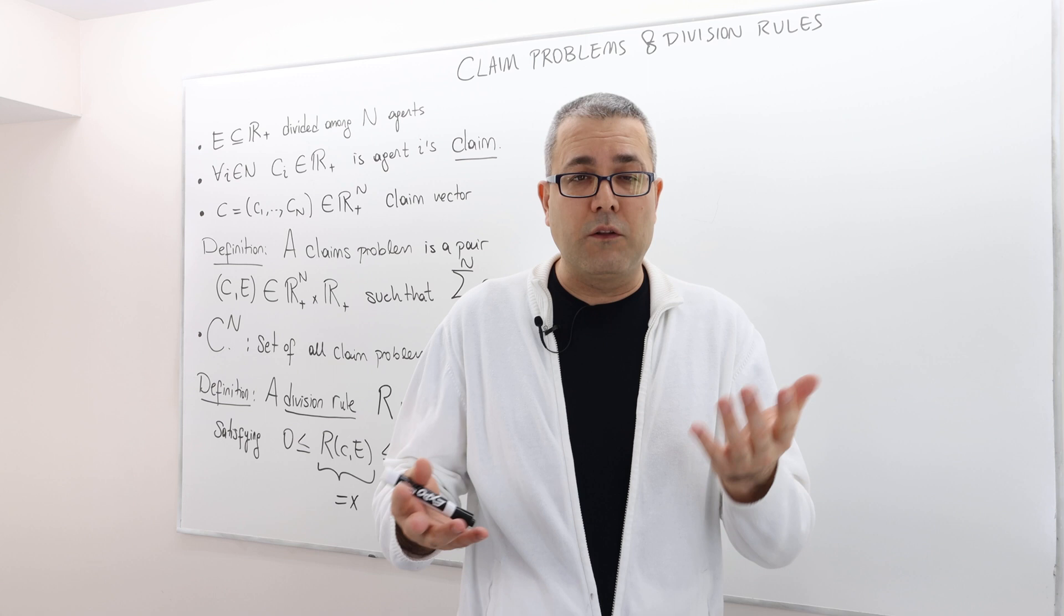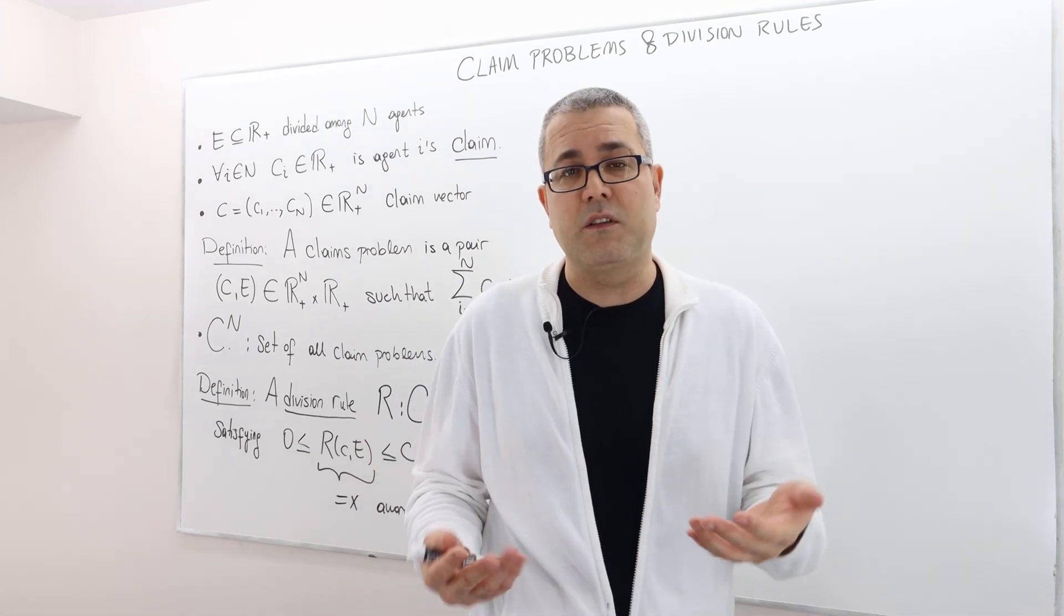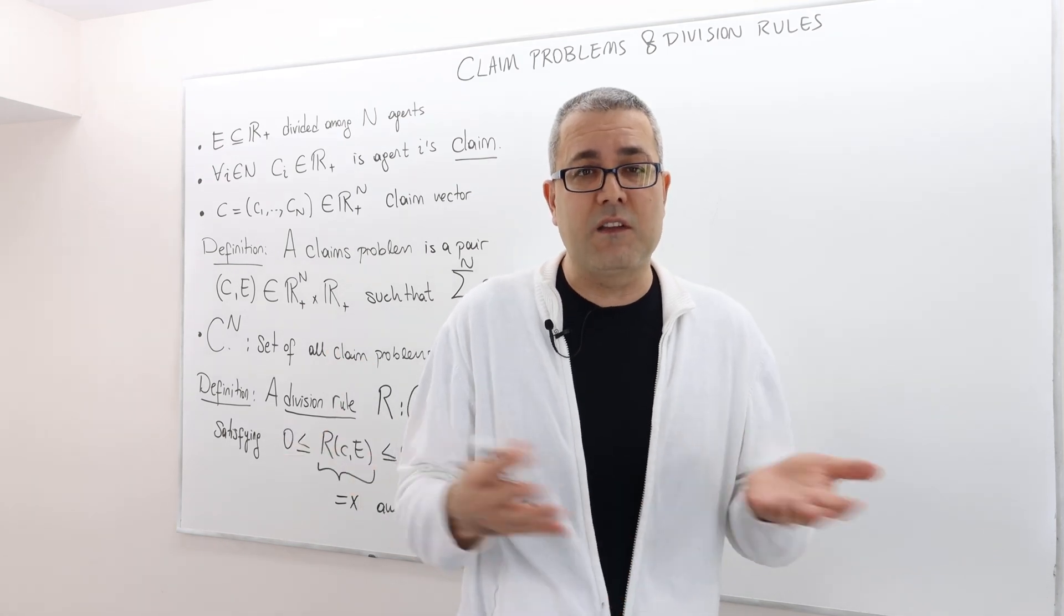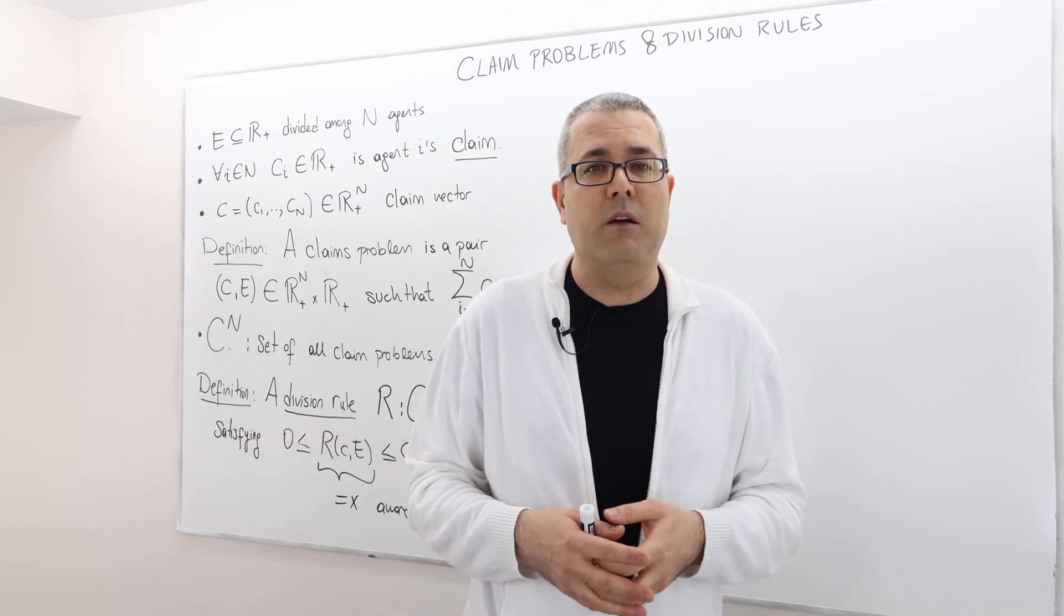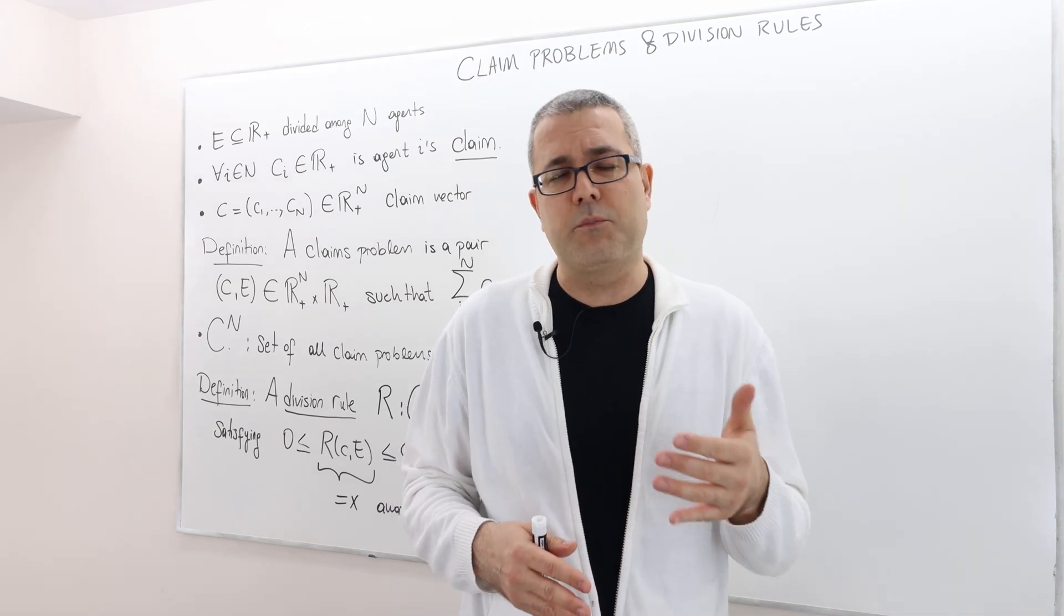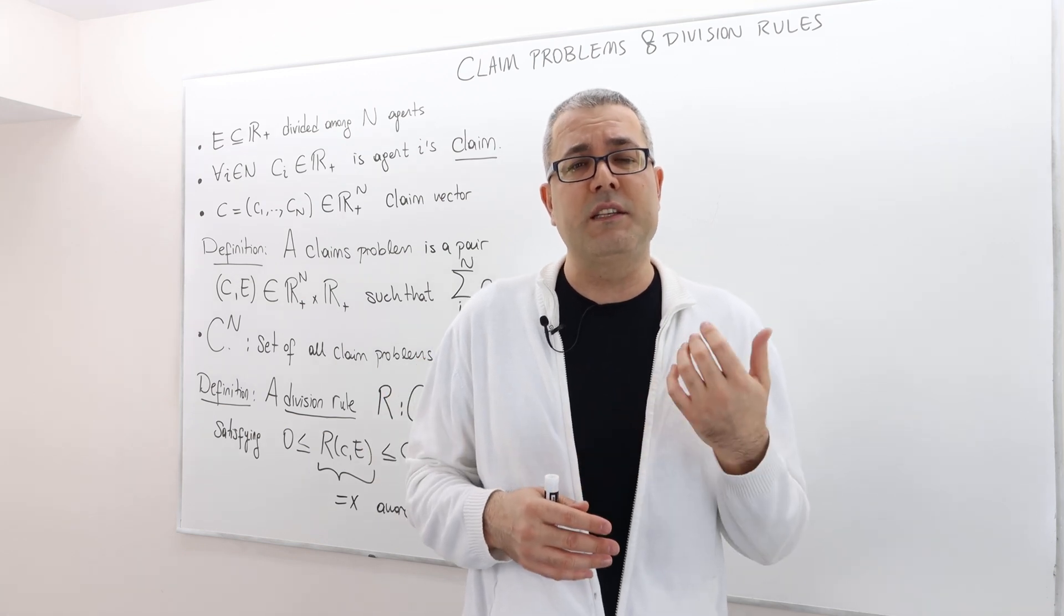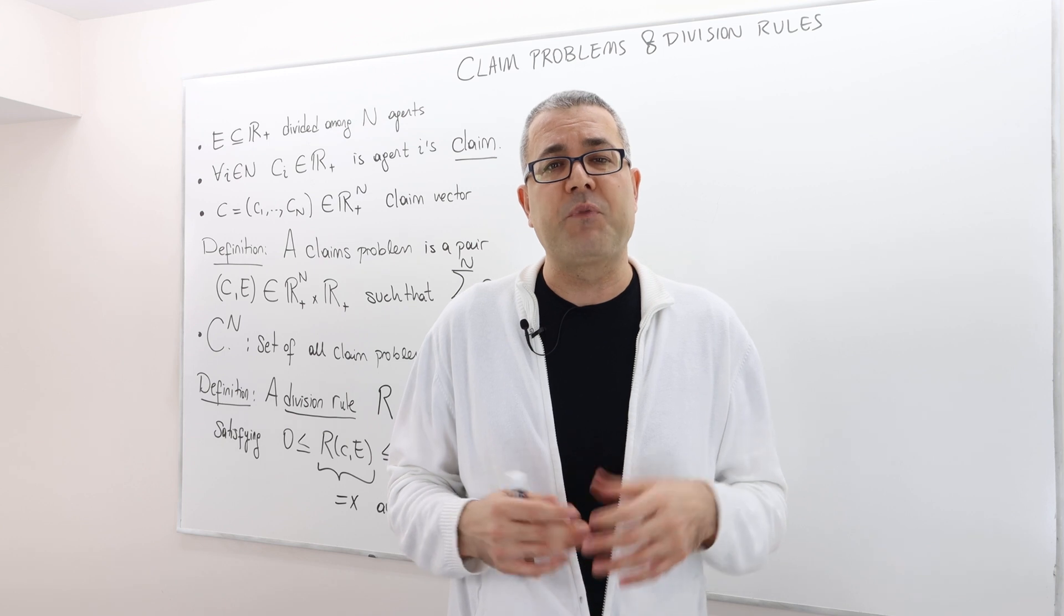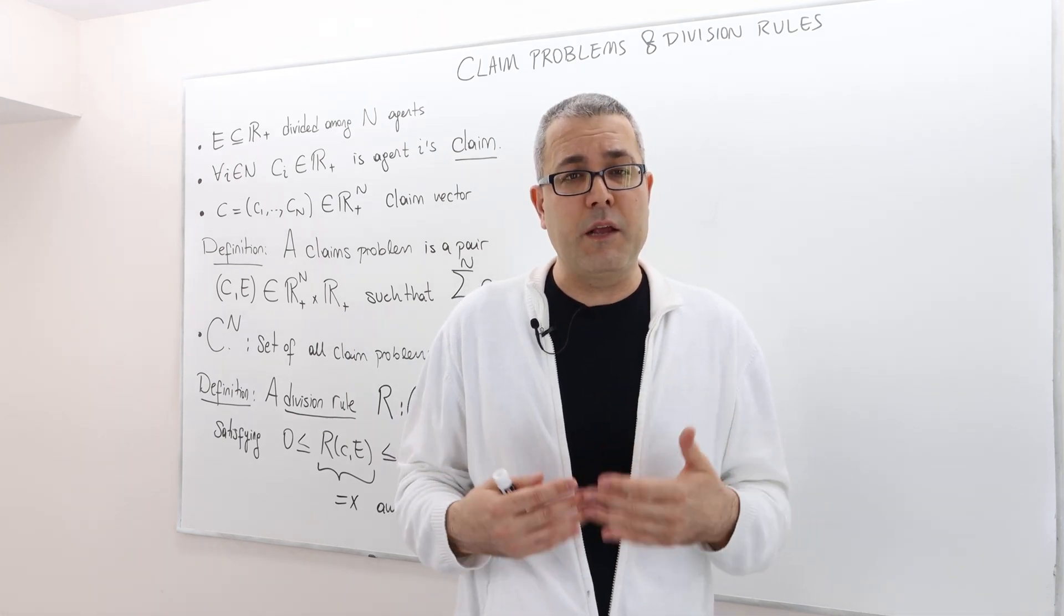However, or alternatively, if my claim is $50,000, your claim is $20,000, so the total claim is $70,000, which is less than what we're supposed to split. Clearly, the problem is not really interesting. So the interesting problem, or the problem gets interesting when our total claims exceeds the amount of surplus we're supposed to split.